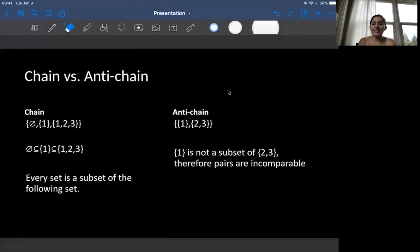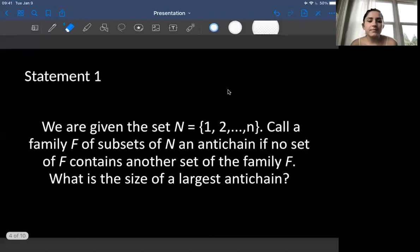Or in other words, there are no sets which are a subset of another set in the anti-chain. So I'm going to reiterate that before we go on to our first statement. An anti-chain is a set of sets in which these sets are not subsets of one another. We'll let that process for a minute, and then we'll look at our first statement.